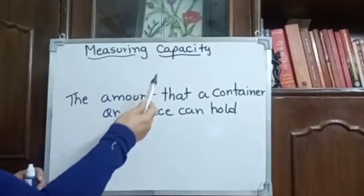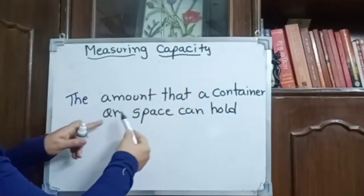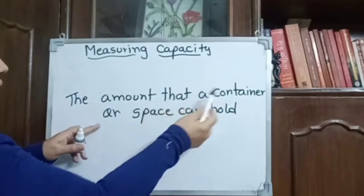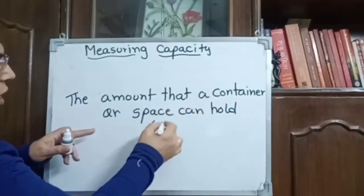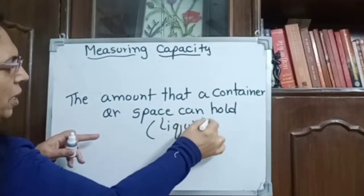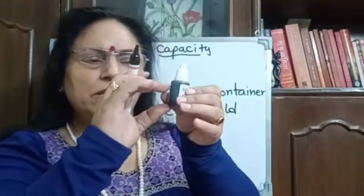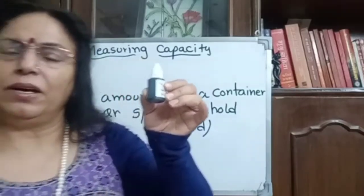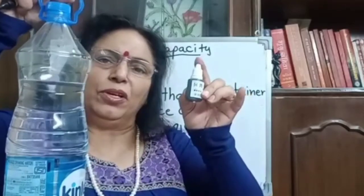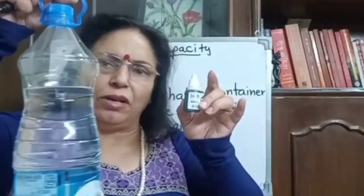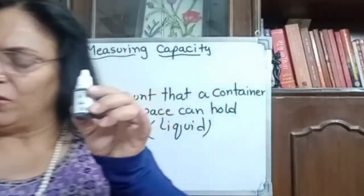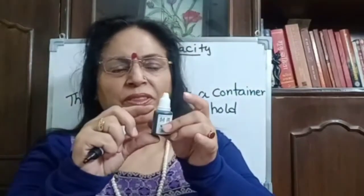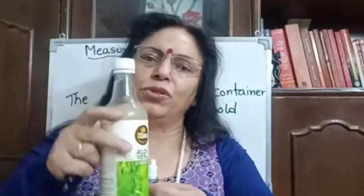Now, measuring capacity. What is capacity? The amount that a container or space can hold — for liquid. Here we have ink: this is a small cup, so the capacity of this ink pot is very small. And here we have a bottle. So for that we use milliliter, and for this we use liter — for bigger capacity. Sometimes we have milk in a bowl or in a spoon — that is milliliter. When milk is in a bottle, that is liter. Like here we have juice — aloe vera juice. This is in liter. This is milliliter. And this one is also in milliliter.